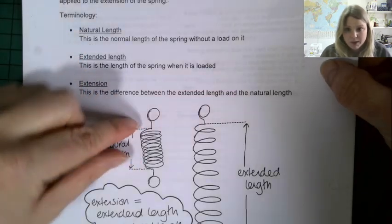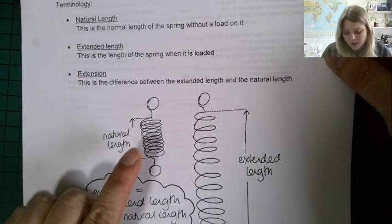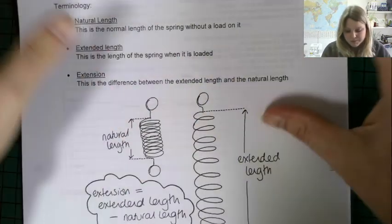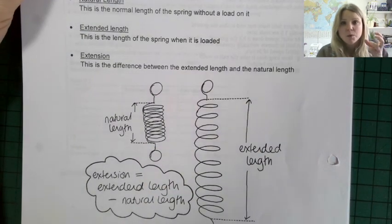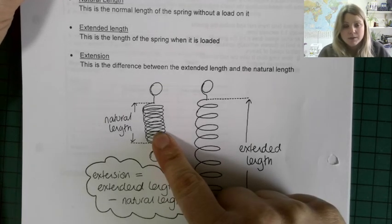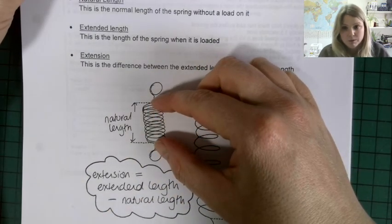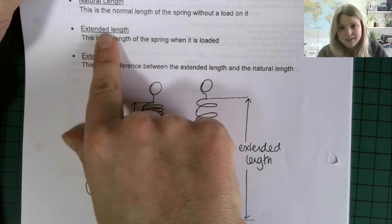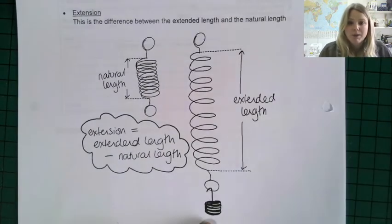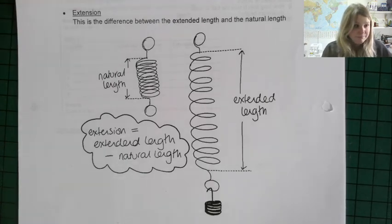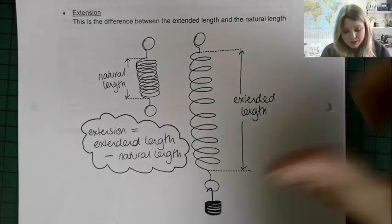The natural length of a spring — I'll use my diagrams here since I don't have one at home to demonstrate — is simply the length of the spring when there's no force being applied to it. You're not hanging any masses off it or pulling it. It's just sitting there minding its own business. The extended length is the length once you do start to apply a force, such as hanging weights or pulling with a particular force.